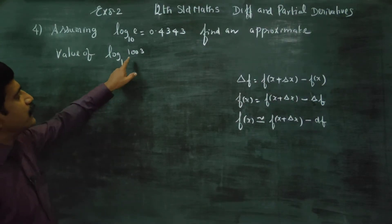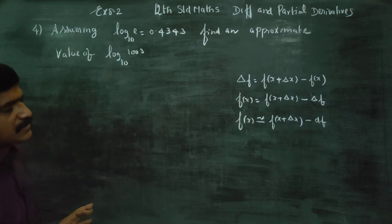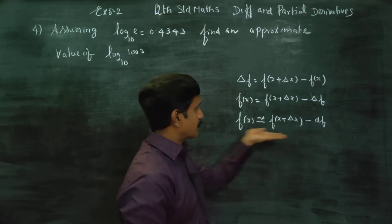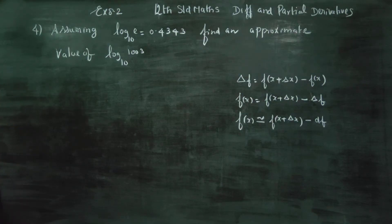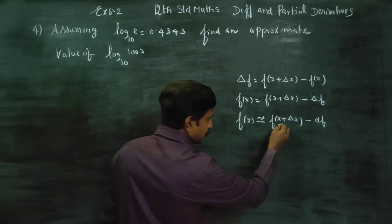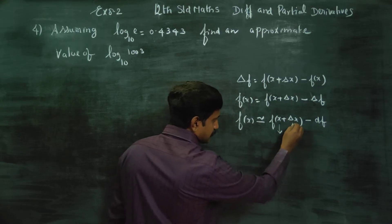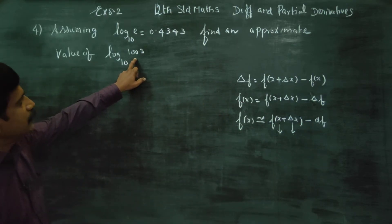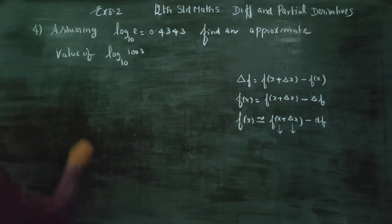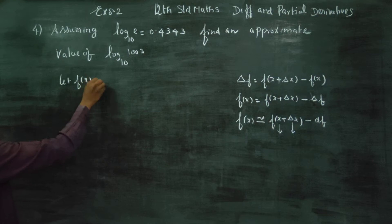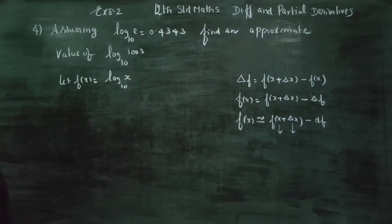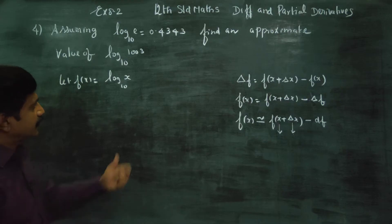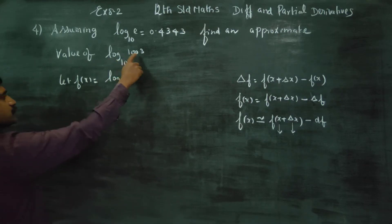We need to find the value of log 1003 base 10. That's why we are going to fix x and delta x accordingly. Let f of x be equal to log x base 10.